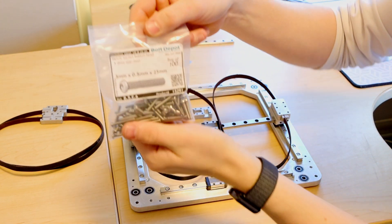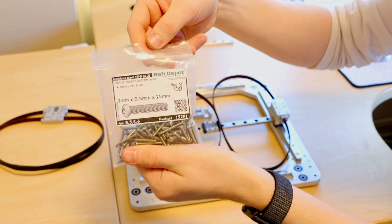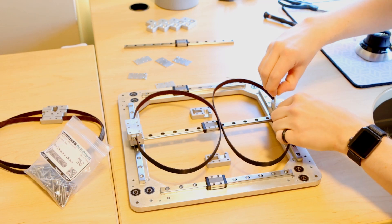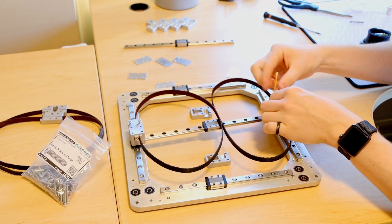And now we'll be using M3 by 25 millimeter button head cap screws to bolt these assemblies all the way through. And these will screw directly into the linear rail below.